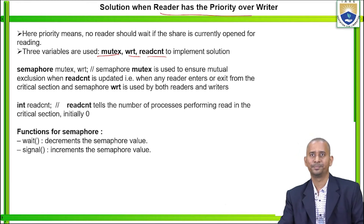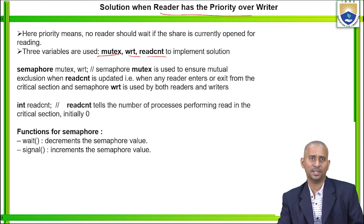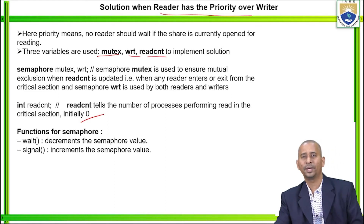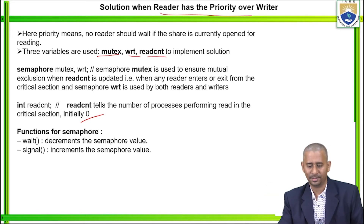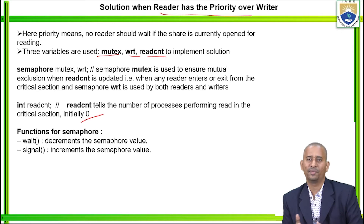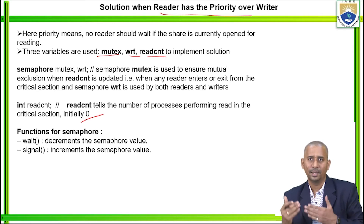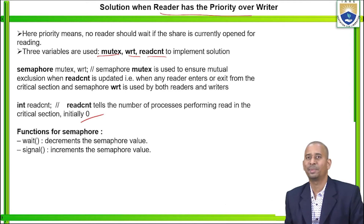The semaphore mutex is used to ensure mutual exclusion when read count is updated — that is, whenever any reader enters or exits the critical section. The semaphore write is used by both readers as well as writers. The integer read count tells the number of processes currently performing read operations in the critical section, initially set to 0. The two semaphore operations are wait, which decrements the semaphore value, and signal, which increments the semaphore value.